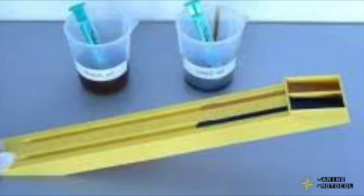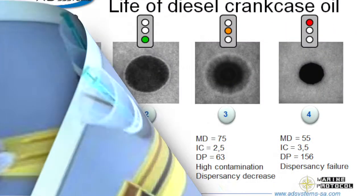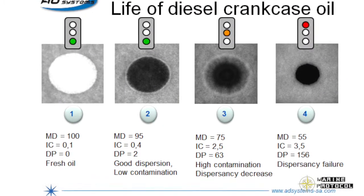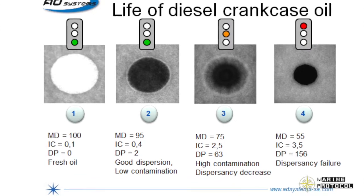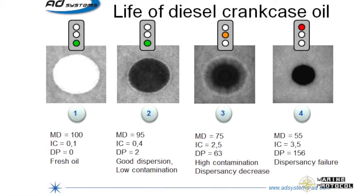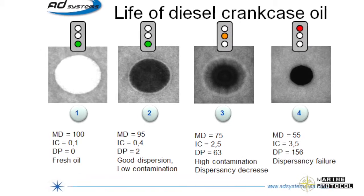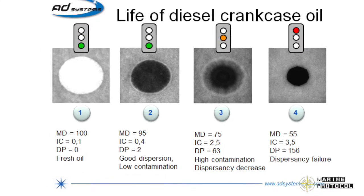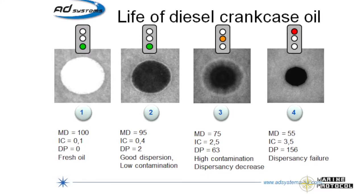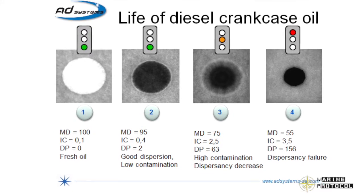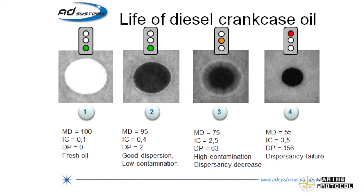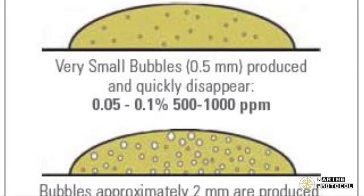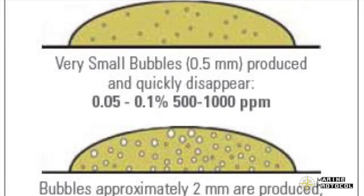Insoluble content test: a drop of sample oil is released from a given height onto a special filter paper. Compare this spot with known varying insoluble content standards. The upper limit for straight mineral oil is 1% to 1.5%, and for detergent dispersant oil is 5%.